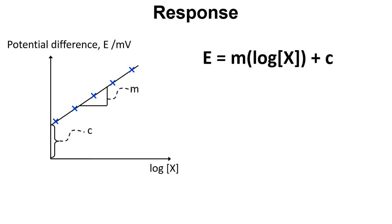So we get an equation for this line of best fit and here we've got E equals M times the log of the concentration plus C. This is very much along the lines of a Y equals MX plus C line of best fit, but we've got E on the Y axis and the log of concentration on the X axis so we end up with the equation shown here.